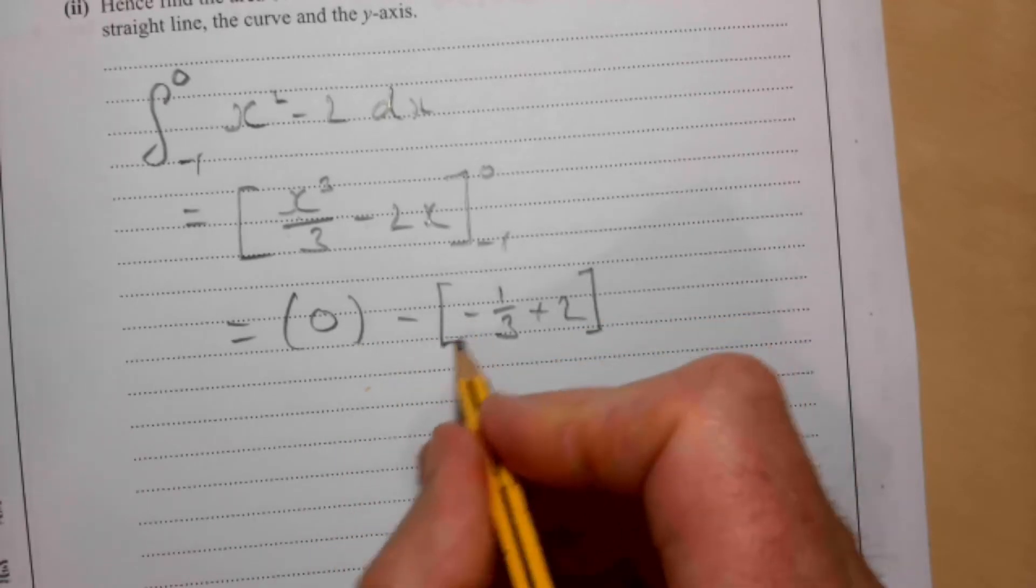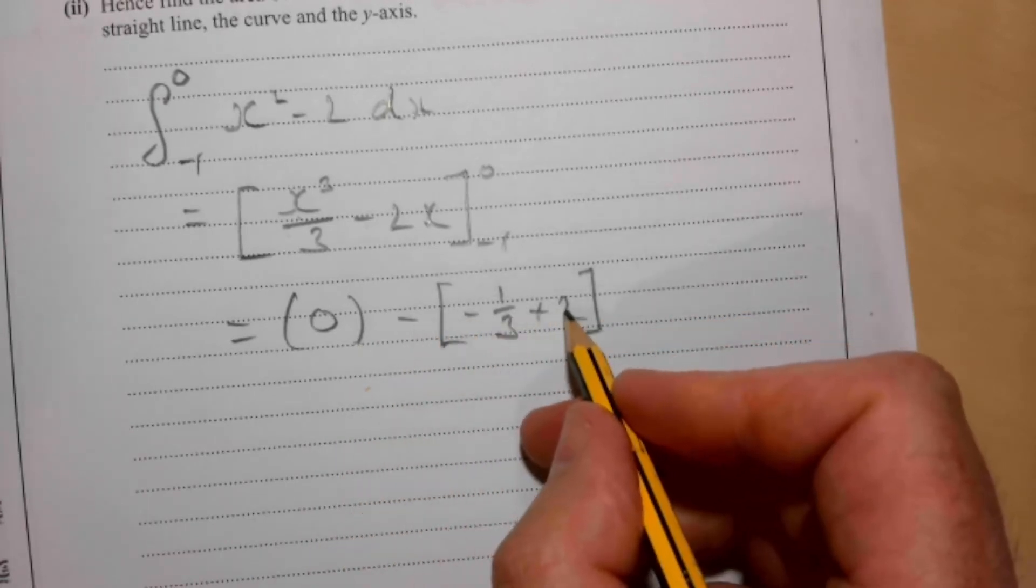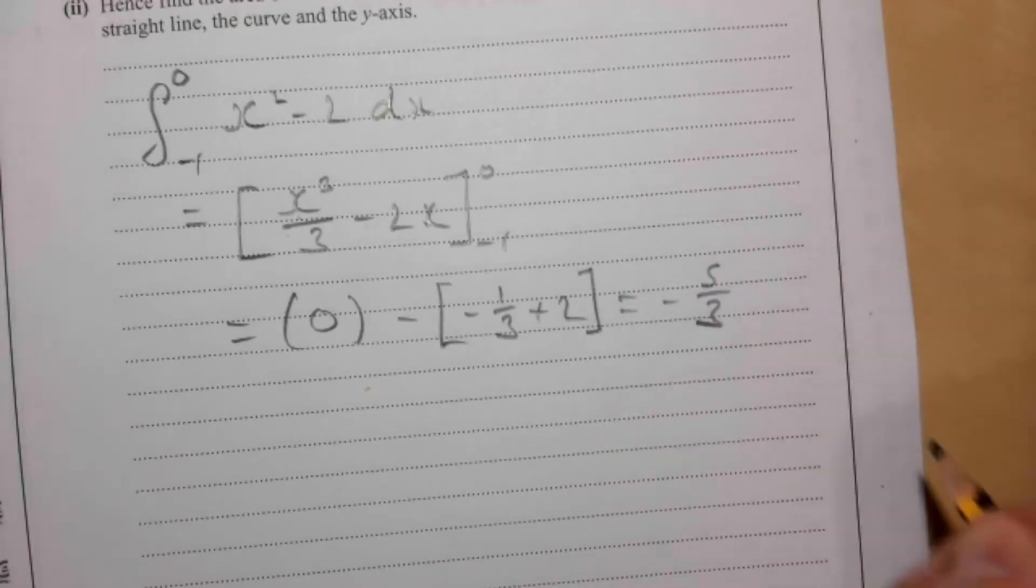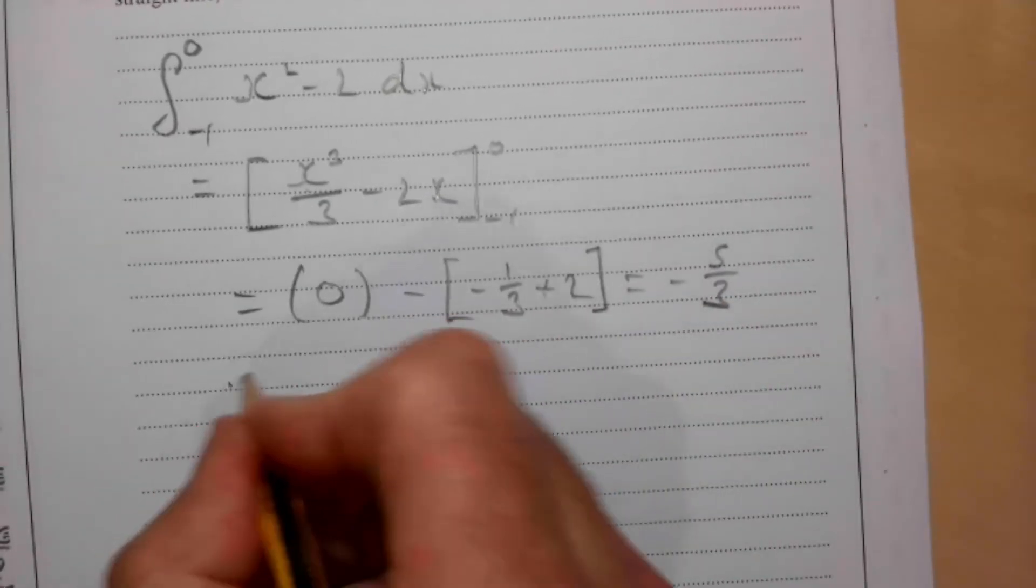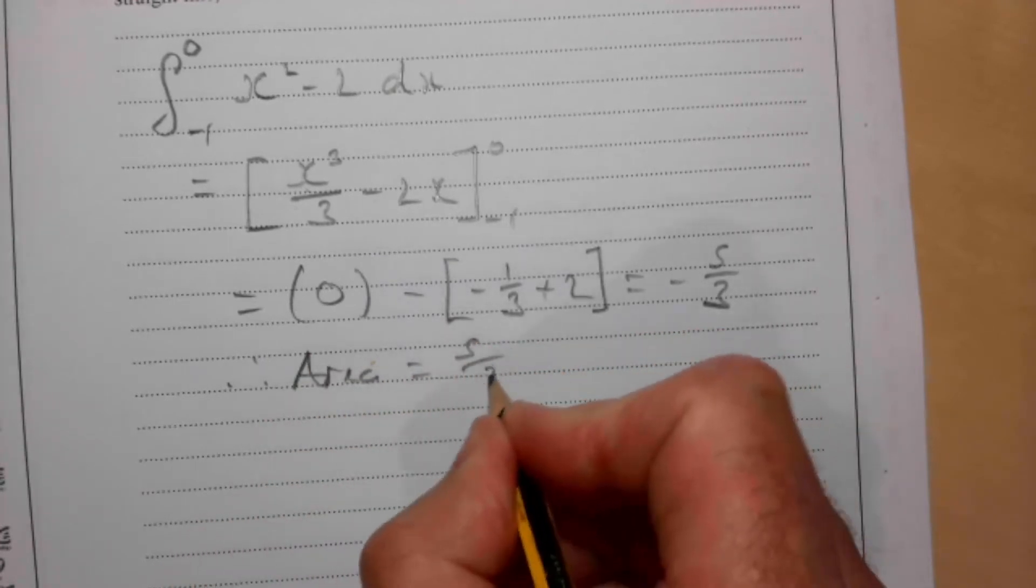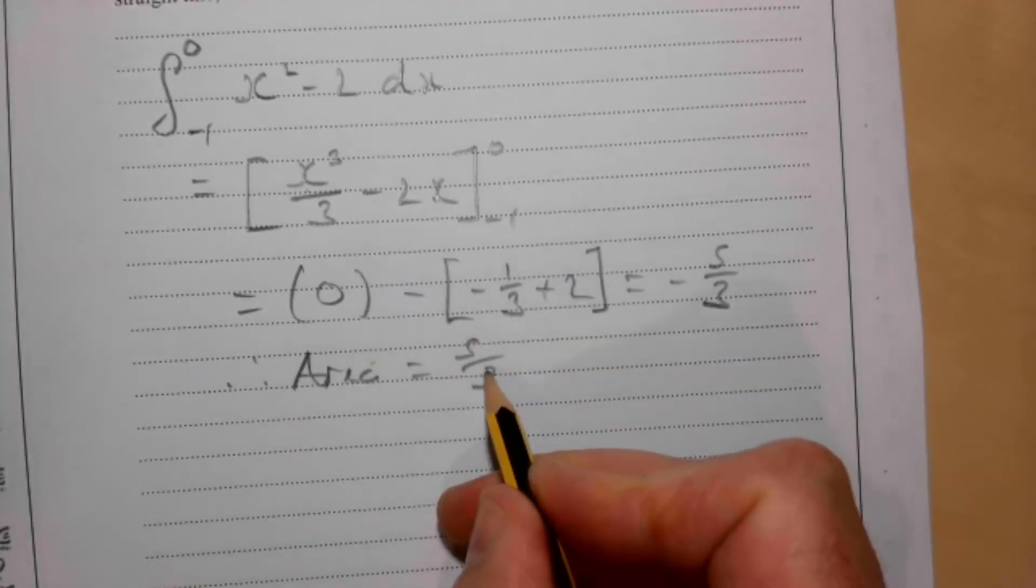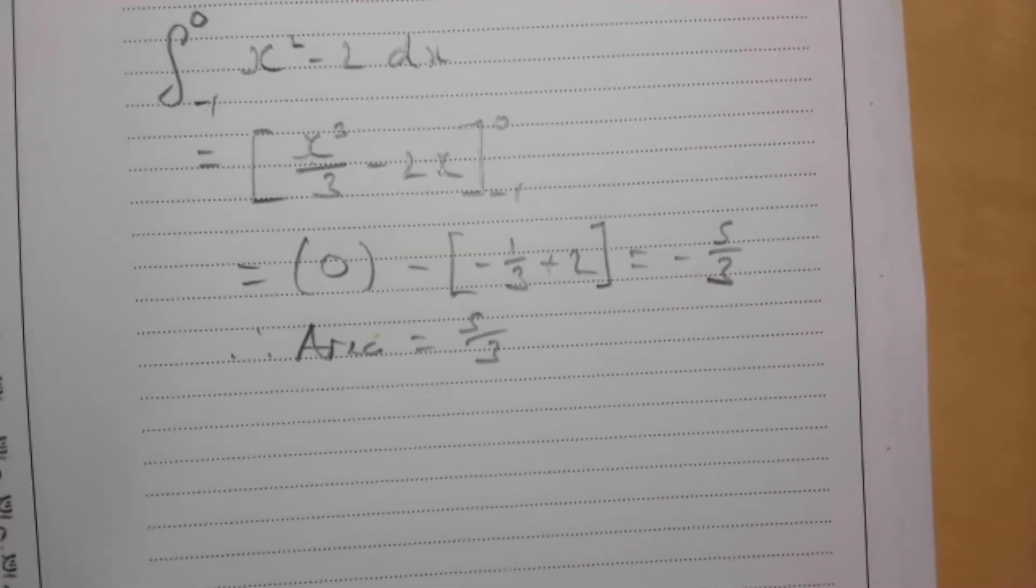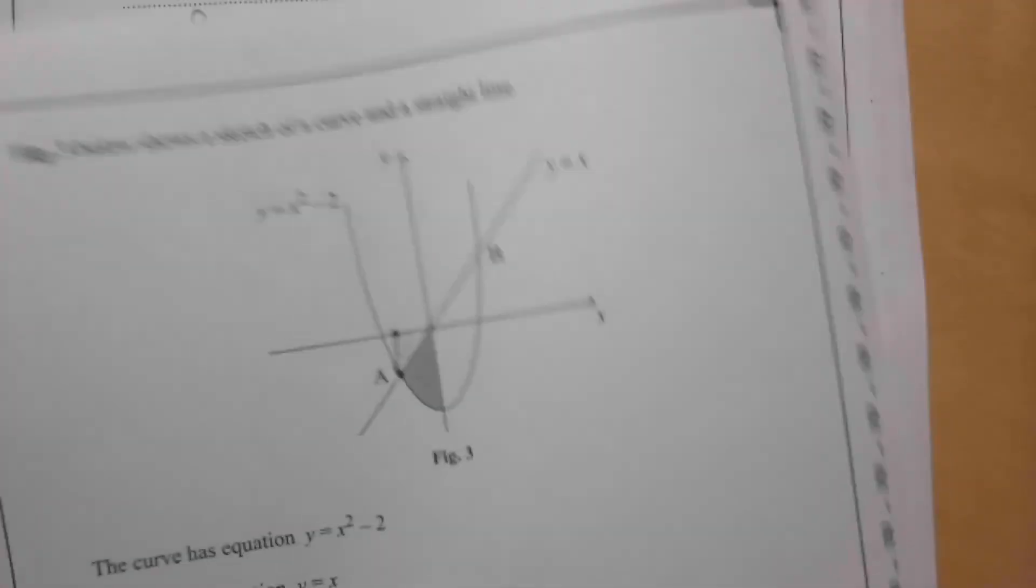So that then gives me, that's minus minus, so minus 1 third plus 2 gives me 5 over 3, so that equals negative 5 over 3. That means the area is 5 over 3 for the bit we've just worked out. The negative represents that it was below the x-axis. So let's go back to our diagram and see what we need to do.